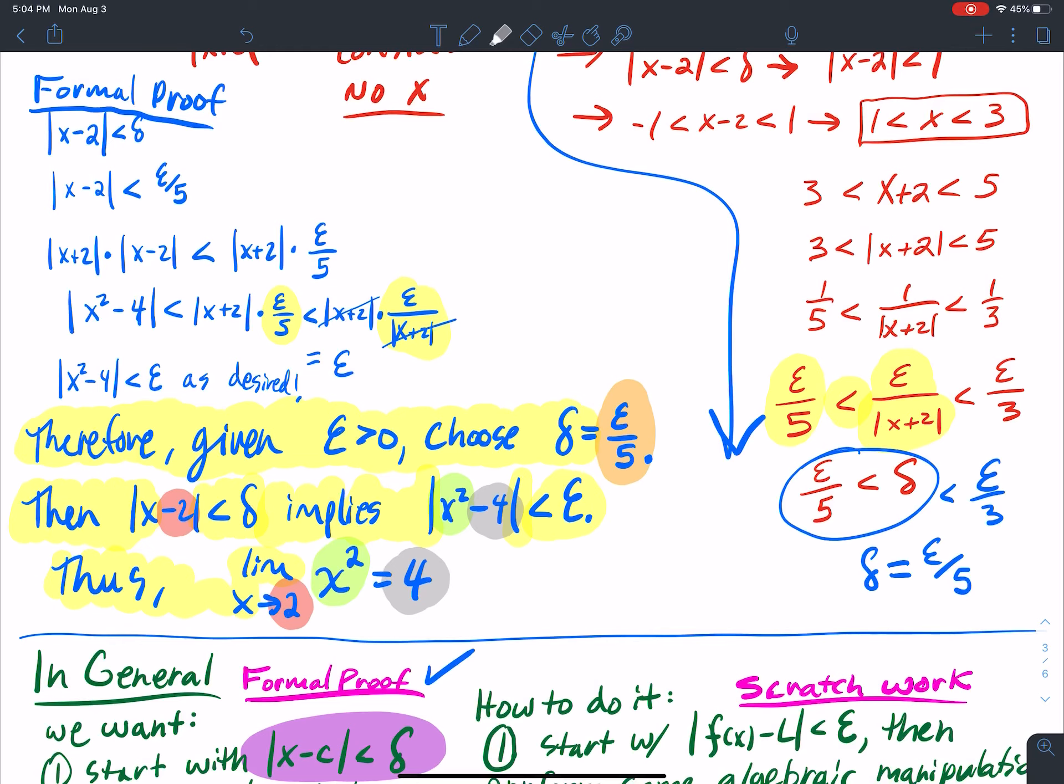So the things in the different color other than yellow, those are the things that are changing from problem to problem. Everything else is set up as the same sentence structure. So this is the structure that I'm looking for. If you see a question like this on your test, it says do the formal proof.